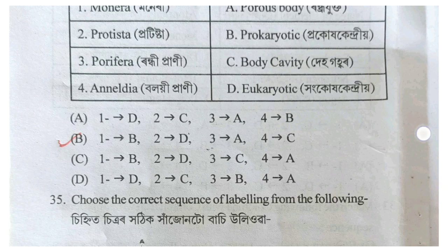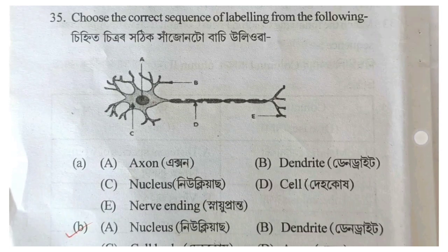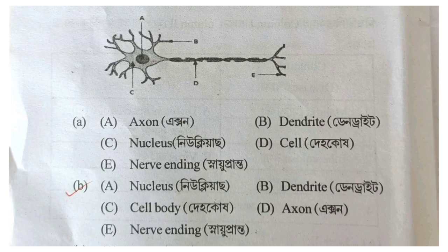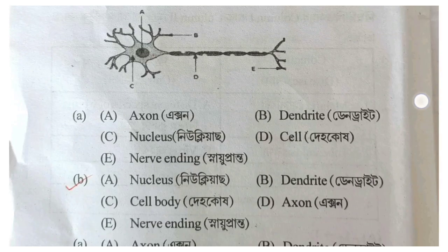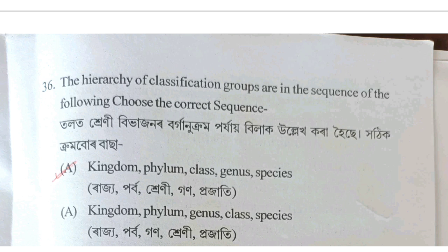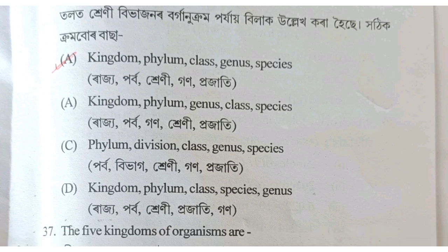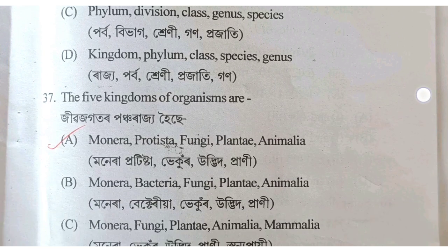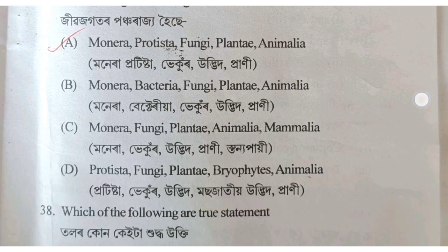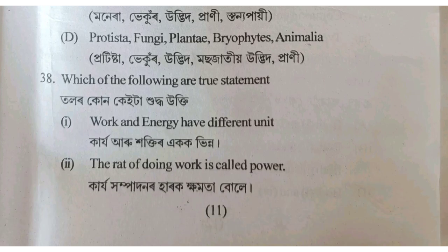Which kingdom does a given organism belong to? Option B: Monera. The correct classification sequence is Monera, Protista, Fungi, Plantae, Animalia. Option A: Monera, Protista, Fungi, Plantae, Animalia.